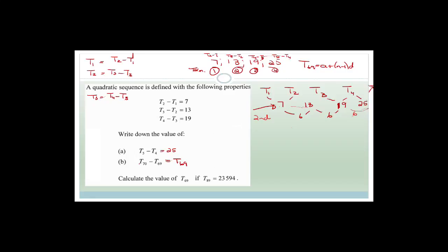Now they want us to write down the value of T70 minus T69. We're actually looking at the differences as our sequence. Because if we look at 7, it's T2 minus T1; 13 is T3 minus T2; 19 is T4 minus T3; and 25 is T5 minus T4. We actually have a linear sequence — a normal AP — with terms 1, 2, 3, 4. The fourth term was T5 minus T4, the third was T4 minus T3, and so on. That means we're looking for the 69th term of this arithmetic sequence, and that's as far as we got.